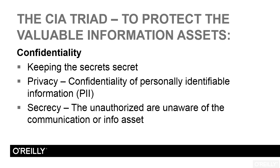However, a bad guy might know that the information exists. Therefore, the information isn't exactly secret, but the information remains confidential. Secrecy deals with the fact that the unauthorized party is unaware of the information asset or the flow of that information across some medium. So secrecy means there isn't even an awareness that the information exists, whereas confidentiality says you might be aware that the information asset exists, but you don't know what the meaning or content of that information was.